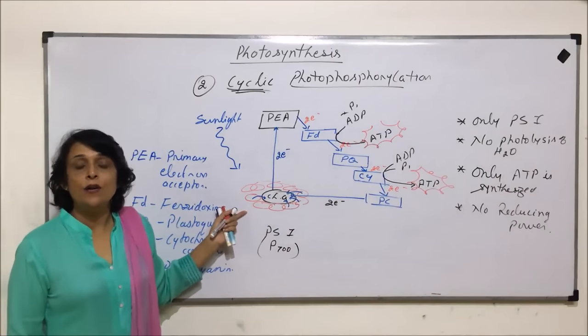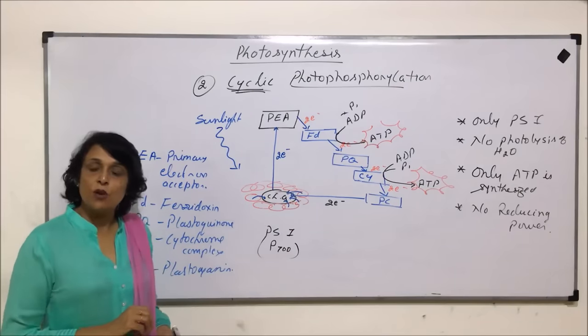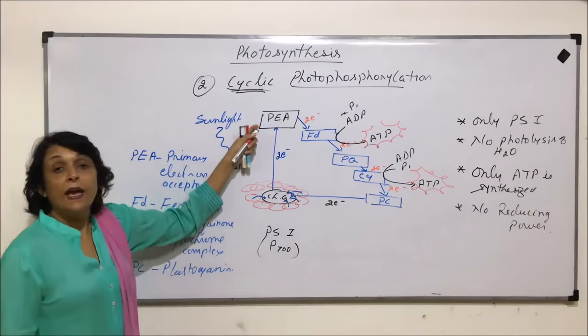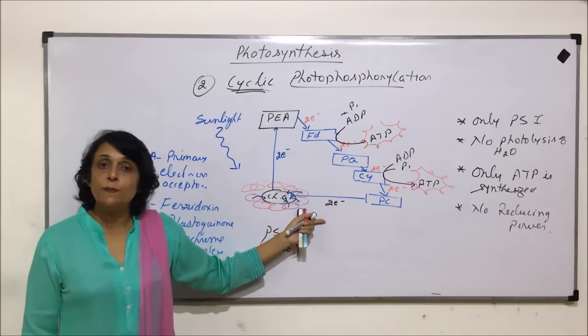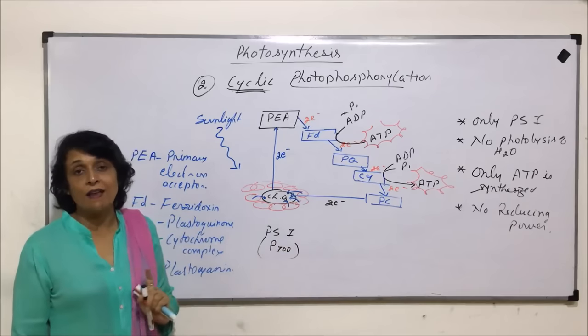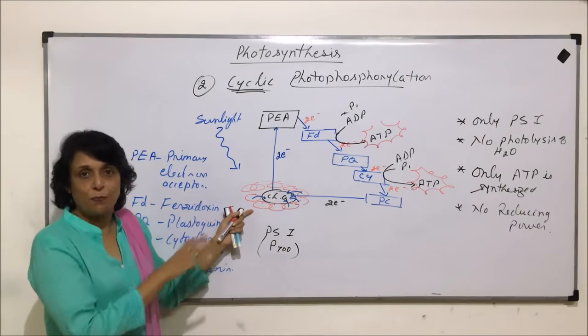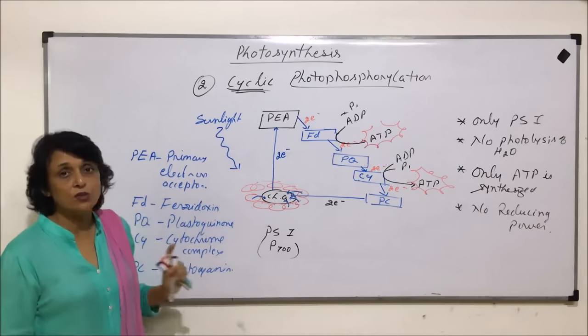As we said, for dark reaction to take place, two things are required. ATP is also required, and reducing power is also required. And this pathway gives only ATP. So, the predominant pathway which takes place is non-cyclic photophosphorylation. This is in less percentage. Around 15 to 20 percent is this, and maximum is non-cyclic.